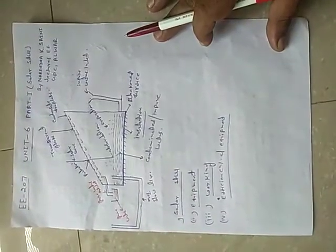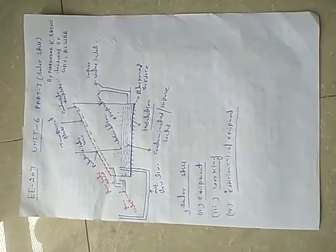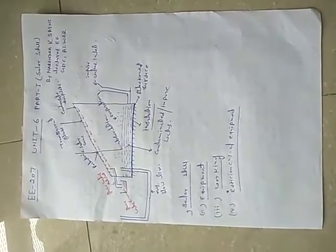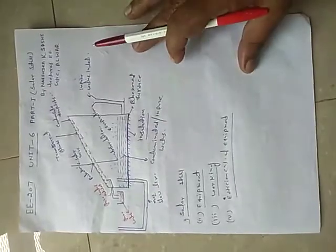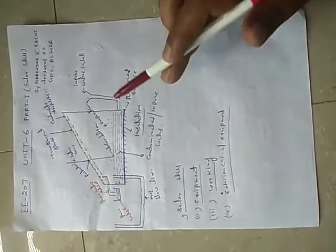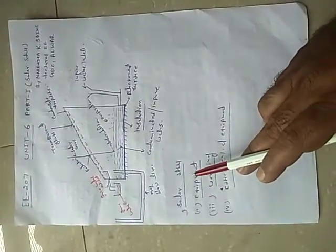Today we will discuss solar still, which is in Unit 6, Part 1st, and subject code is EE 207. My name is Nahindra Kumar Saini, a lecturer in electrical engineering at Gourmet Polytechnic College, Alwar. So first, this is the diagram of solar still. First of all, we see what is solar still.